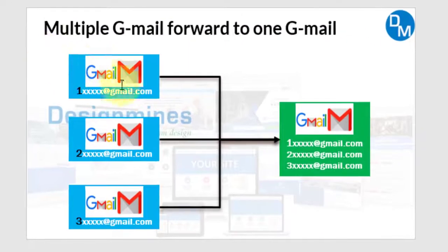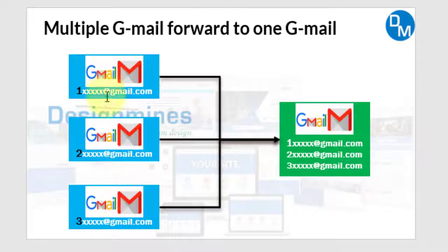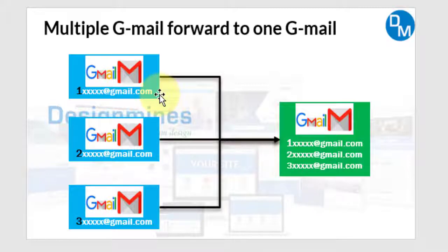In the same way, you can set up any number of email accounts to forward to one Gmail account. You can directly log in to your primary account and check all emails coming from different accounts. It's very easy to set up. Please let me know in the comments if you need any clarification. If you found this video useful, please like, share, and subscribe. Thank you for your time.